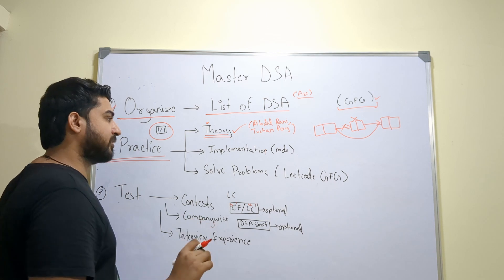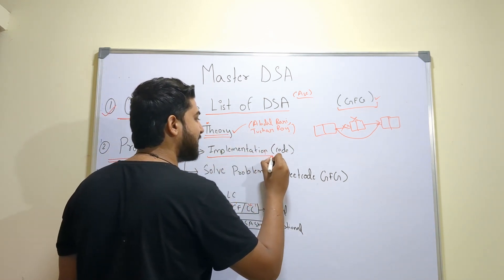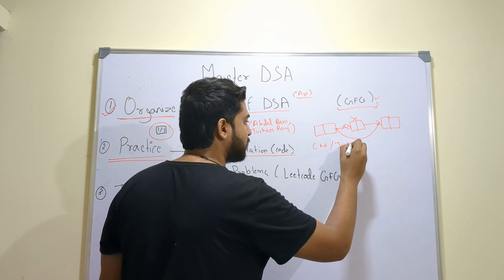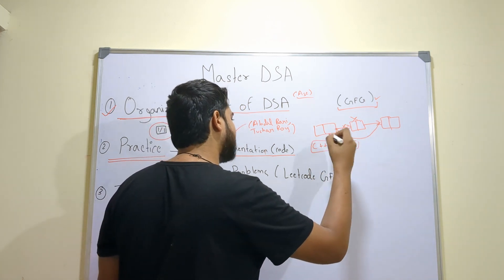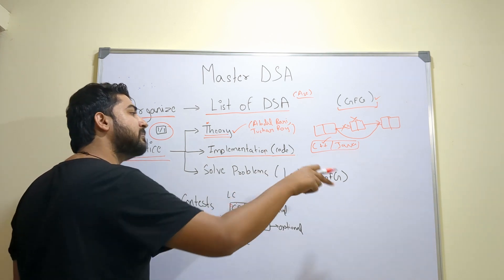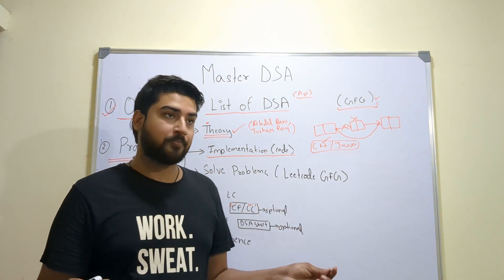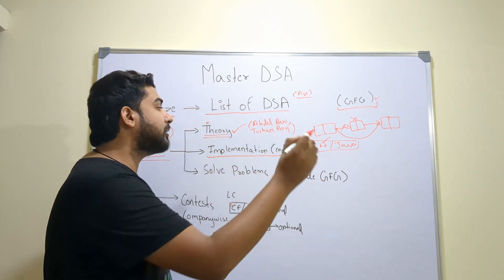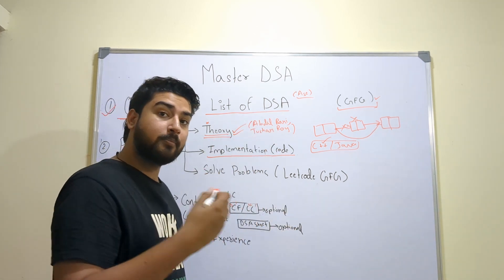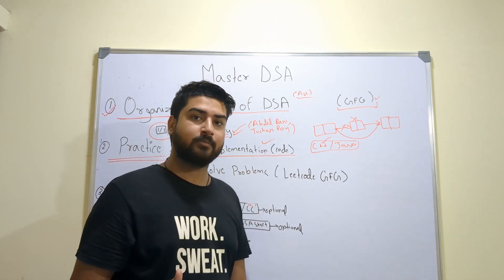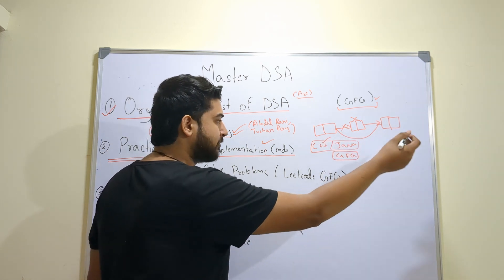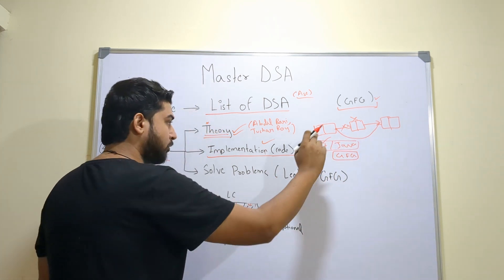Once you're clear with the theory, you need to implement it in code. I suggest going with C++ or Java — preferably C++. Suppose you've learned linked list theory; now implement the working of linked list in code. Or if you've learned Dijkstra's algorithm, implement it via code. For each data structure or algorithm you've learned, first learn the theory, then implement it. If you face issues, GeeksforGeeks has implementations of every data structure and algorithm in C++, Java, and Python — but stick to C++ or Java.